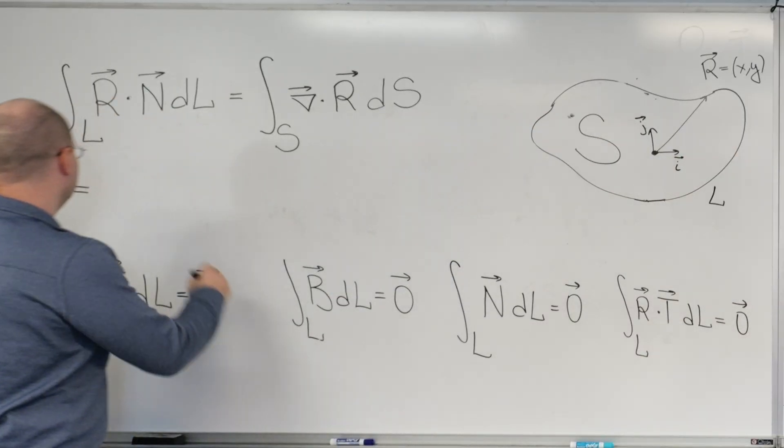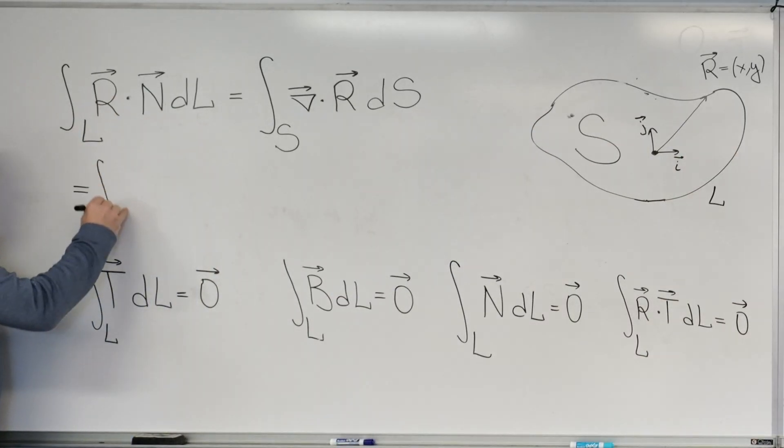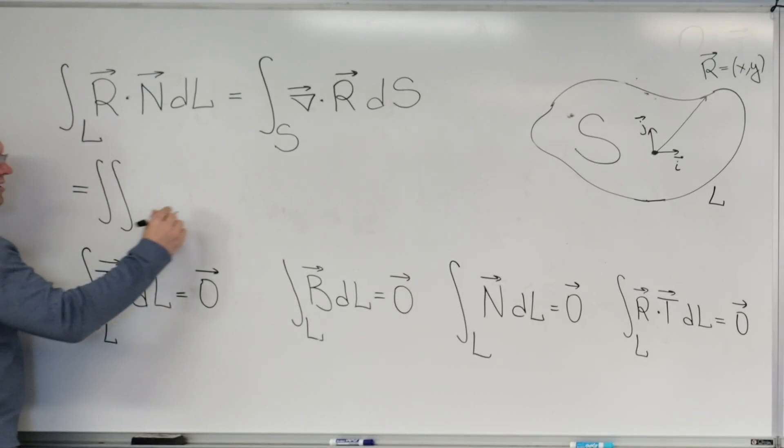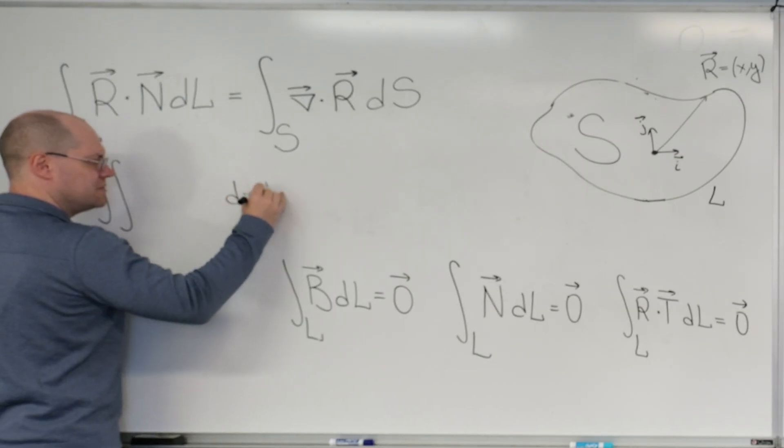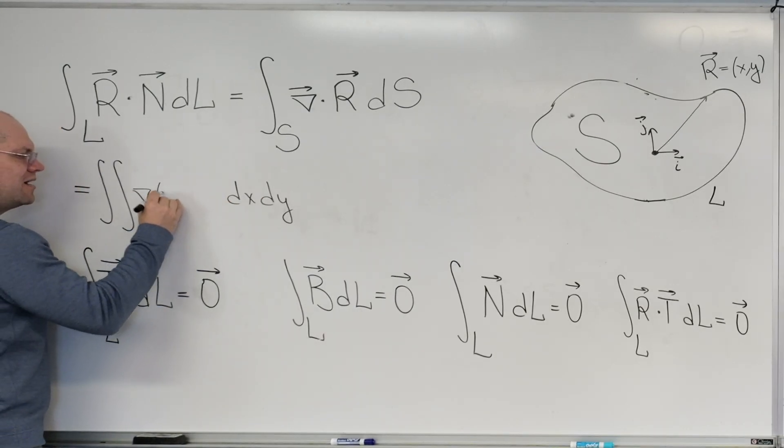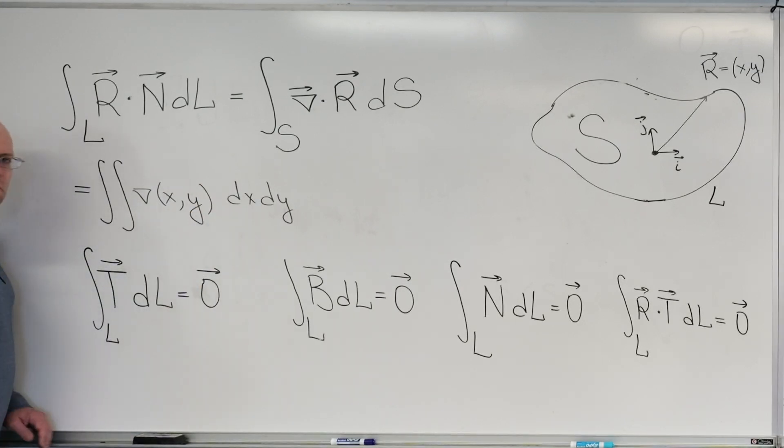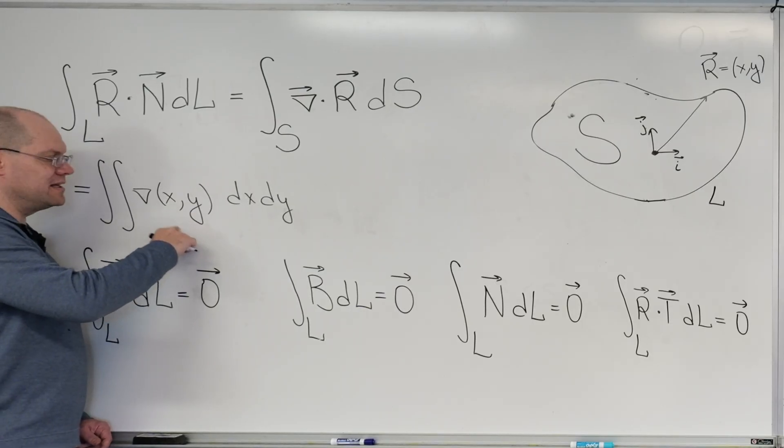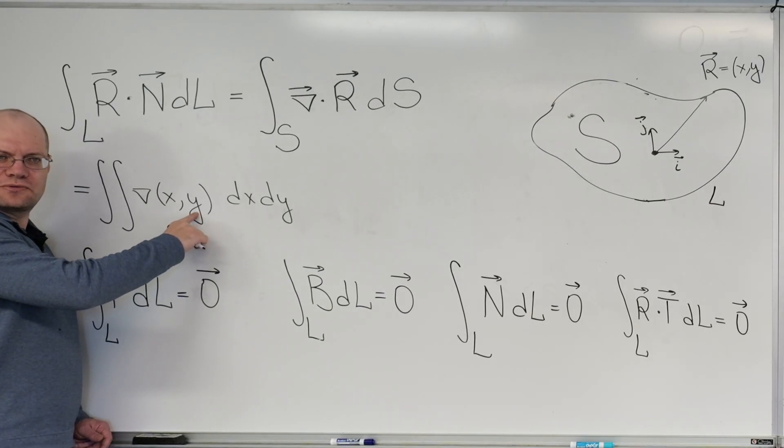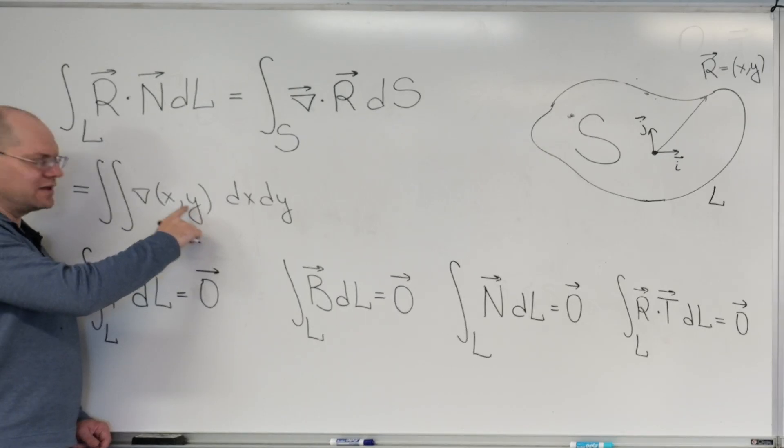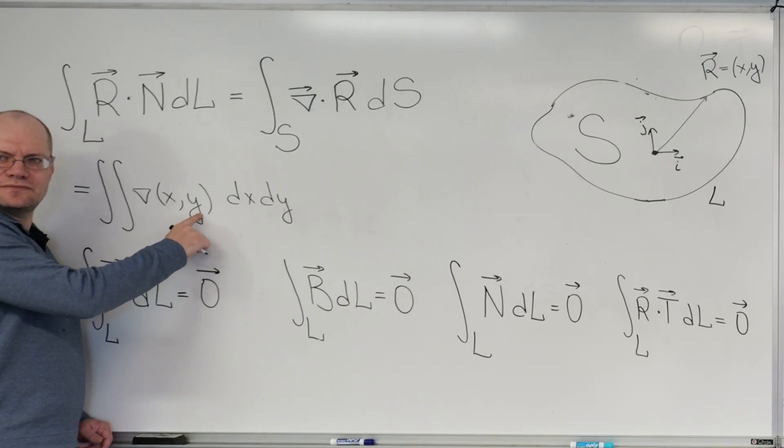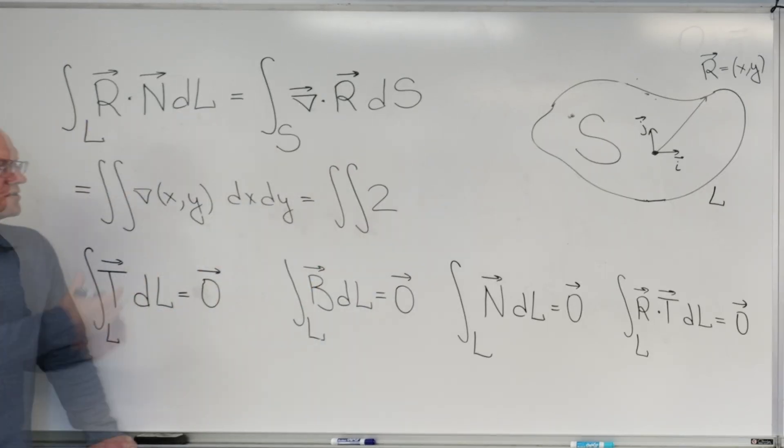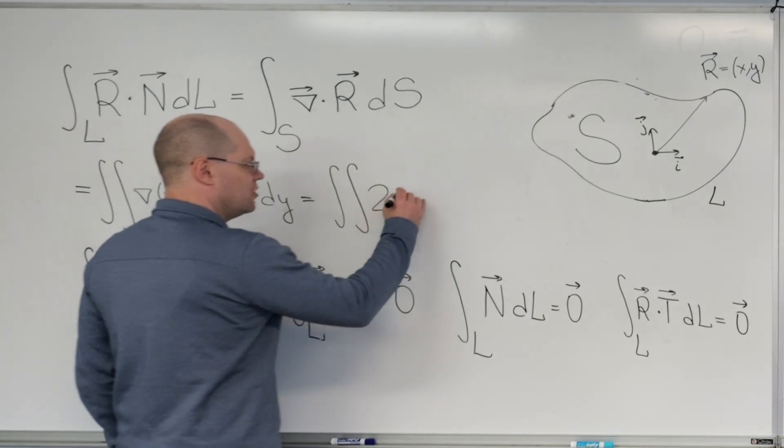So here we have, we're now in Cartesian coordinates, so it's a double integral, whatever the limits are, dx dy of the divergence of x comma y. As you remember, the formula for the divergence is the derivative of the first component with respect to x plus the derivative of the second component with respect to y, and so it's one plus one, two. In three dimensions it would be three.